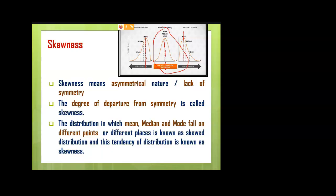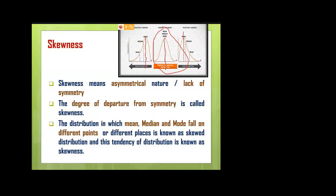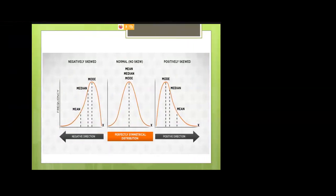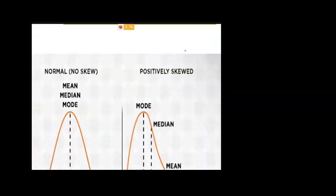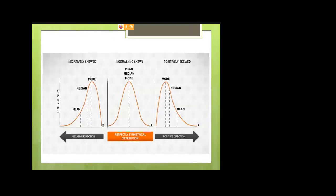The asymmetrical nature means that once you divide the curve at the center, you won't get two equal parts — this is called asymmetric nature. In the last class we discussed that in the normal probability curve, the skewness value equals zero, meaning the curve is symmetric. But here we are talking about asymmetric curves where the skewness value is never zero.